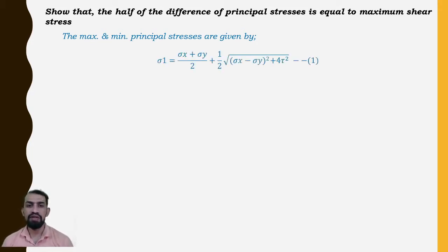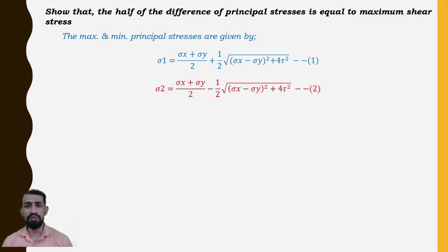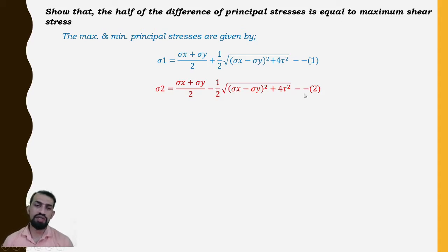The maximum and minimum principal stresses are given by: σ1 = (σx + σy)/2 + (1/2)√[(σx − σy)² + 4τ²] as the first equation, and the minimum principal stress σ2 = (σx + σy)/2 − (1/2)√[(σx − σy)² + 4τ²] as the second equation.